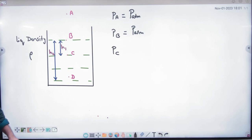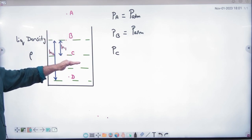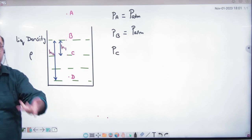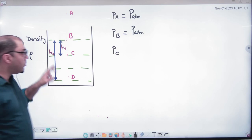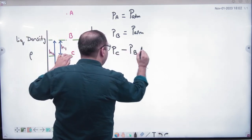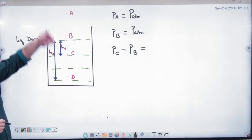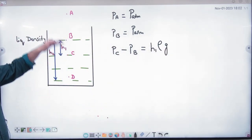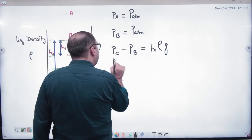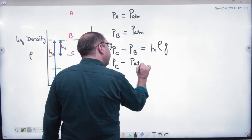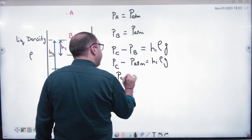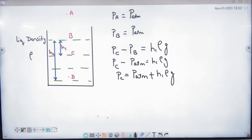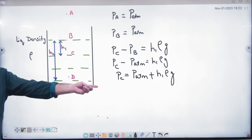Now, where does point C lie? Under the water — under the liquid, by a distance of h1. So the pressure increases going downward. The pressure difference: C point minus B point pressure equals h1·ρ·g. B point pressure is atmospheric, so C point pressure equals P_atmospheric plus h1·ρ·g. So when we ask about C point pressure, it includes both atmospheric and liquid pressure.